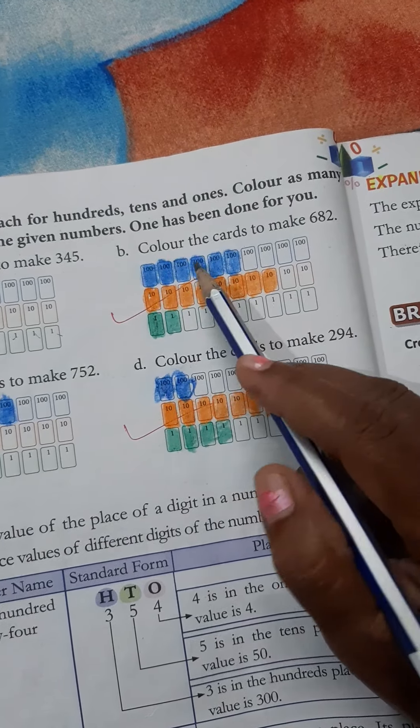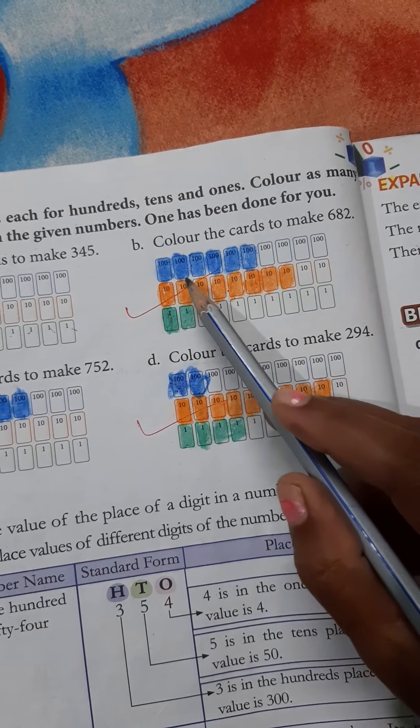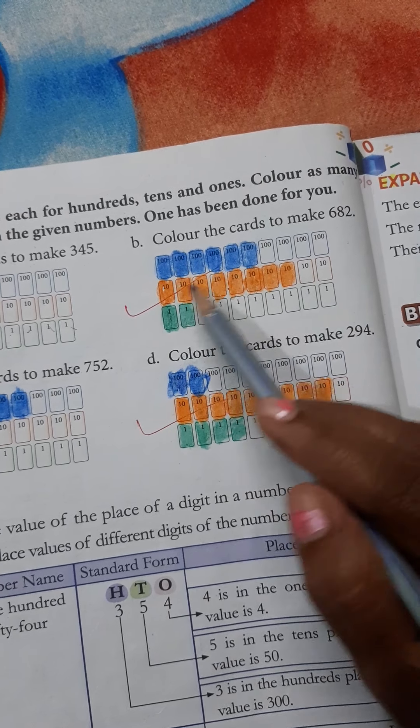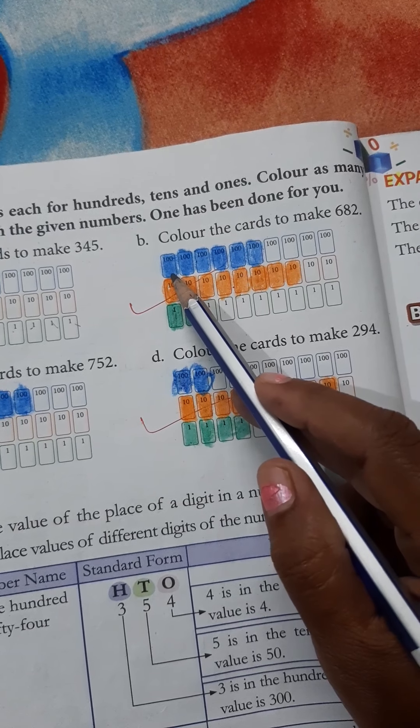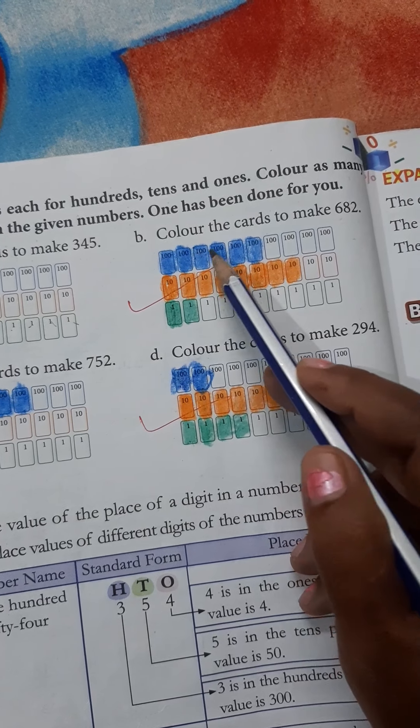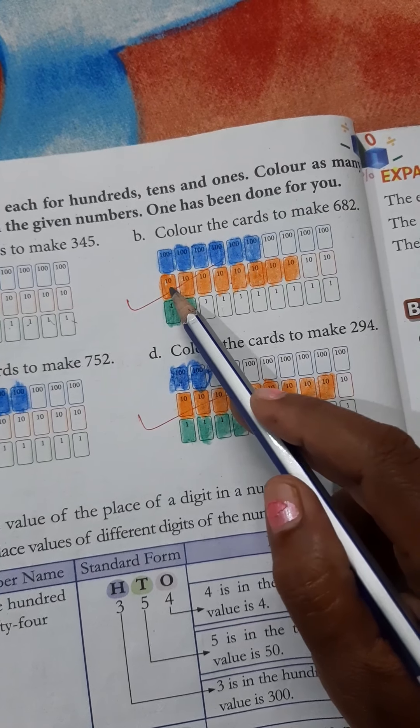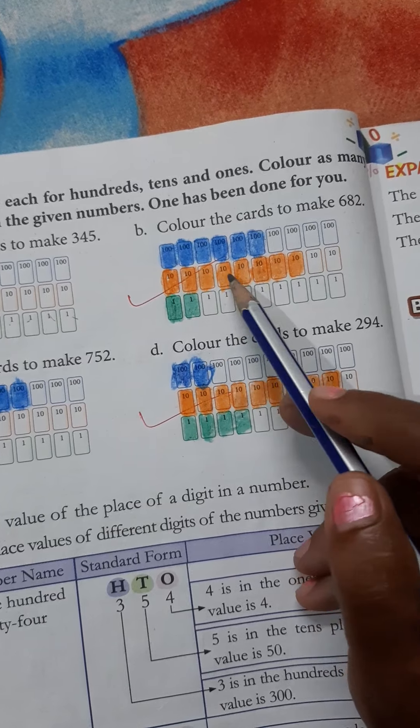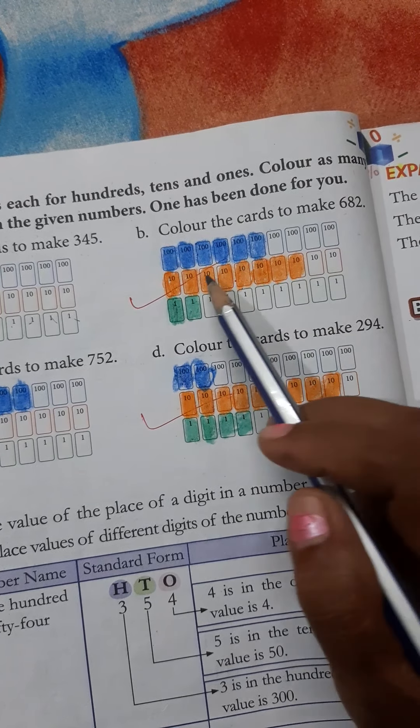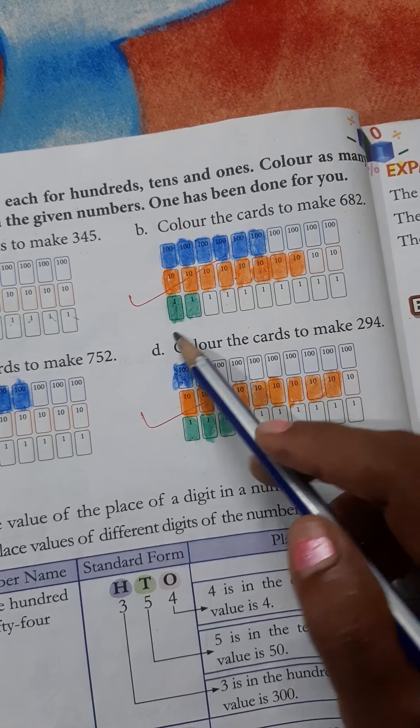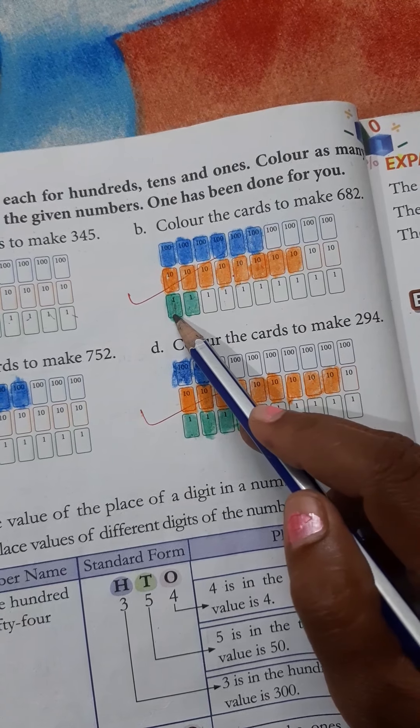Then, we go to number B. Color the cards to make 682. There are 10 cards. We make 6 cards with blue color. 1, 2, 3, 4, 5, 6. Then, 8 cards in orange color. 1, 2, 3, 4, 5, 6, 7, 8. 8 tens means 80. Then, 2 cards with green color. 1, 2.